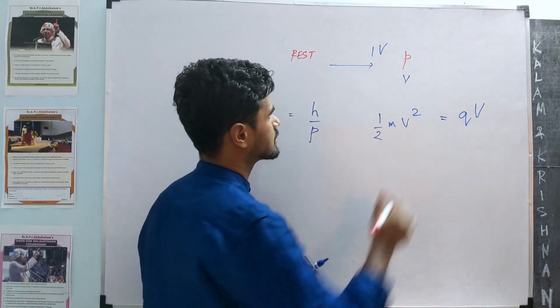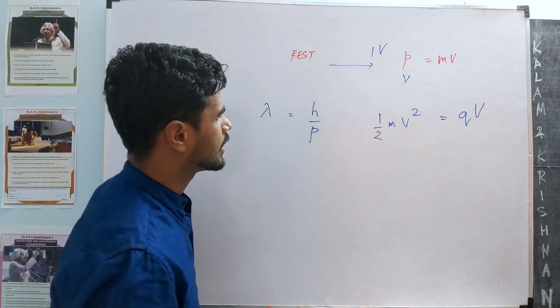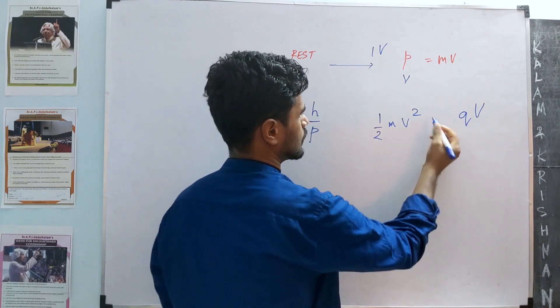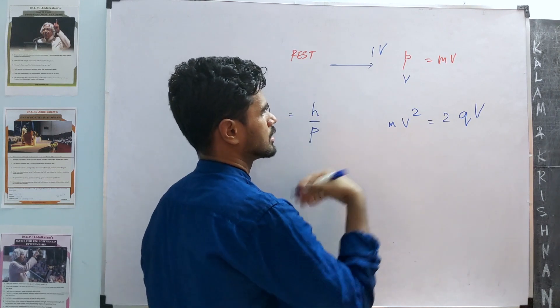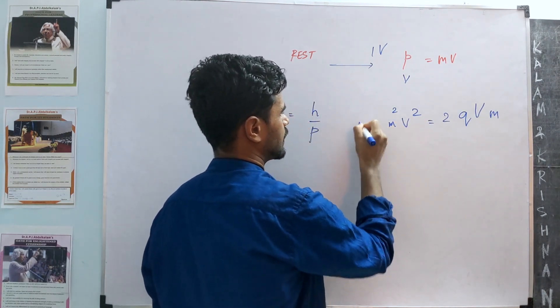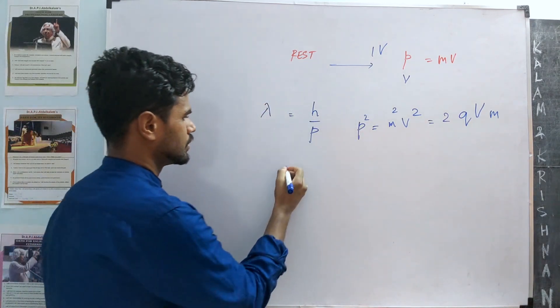Yes, we know P is mv, so let's rewrite this equation. Let's bring this 2 over to this side and multiply it by an m. We have P² over here.